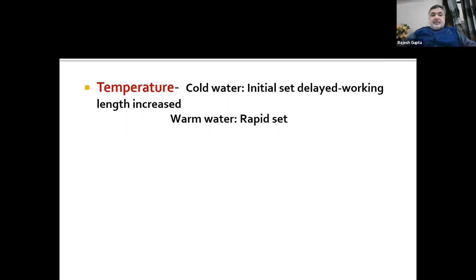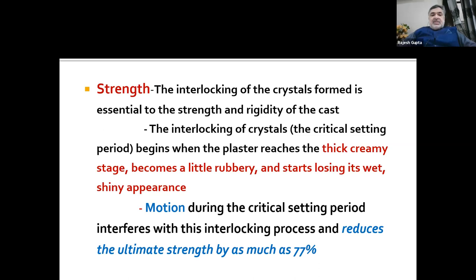Coming to strength: the interlocking of crystals formed is essential to the strength and rigidity of the cast. The interlocking — also known as the critical setting period — begins when the plaster reaches a thick creamy stage, becomes a little rubbery, and starts losing its wet shiny appearance. Motion during the critical setting period interferes with this interlocking process and reduces ultimate strength by as much as 77%. While applying a plaster cast, we should not move the extremity; we have to keep it static. If we keep moving the extremity, the plaster takes longer to set and we end up applying more bandages, making the cast very heavy.